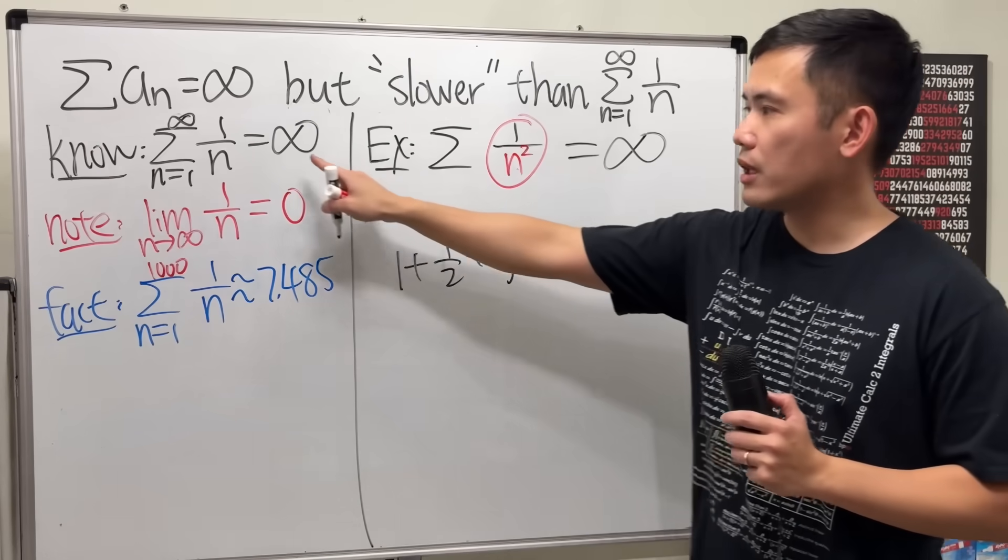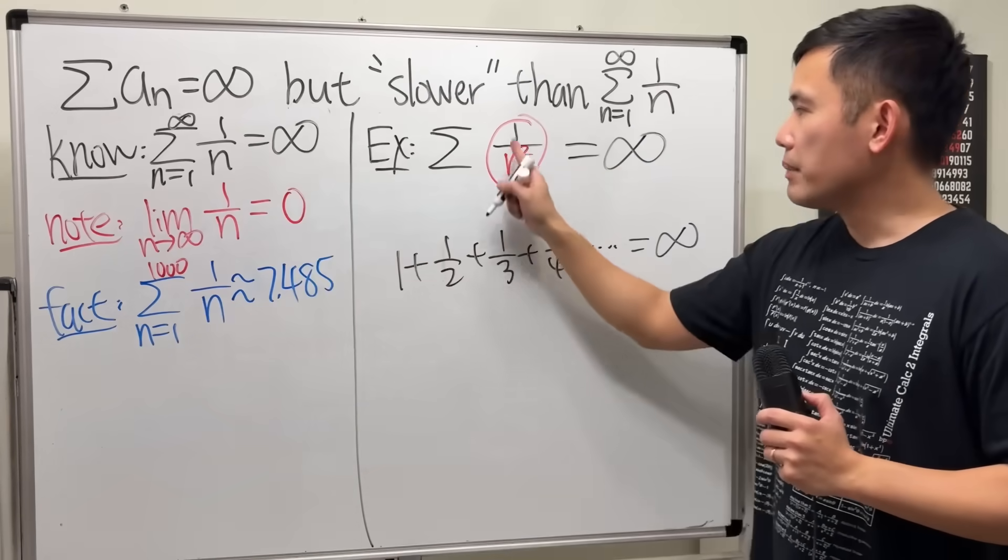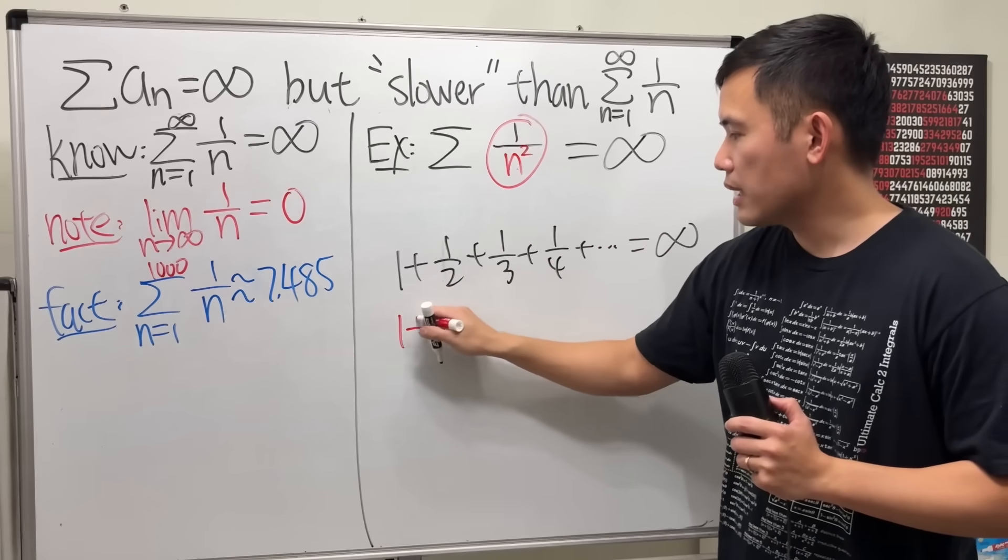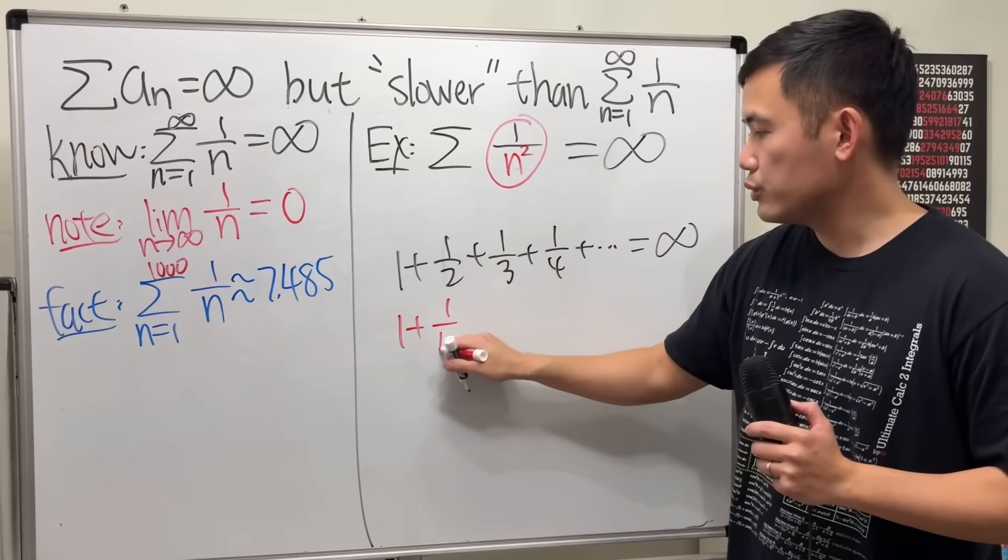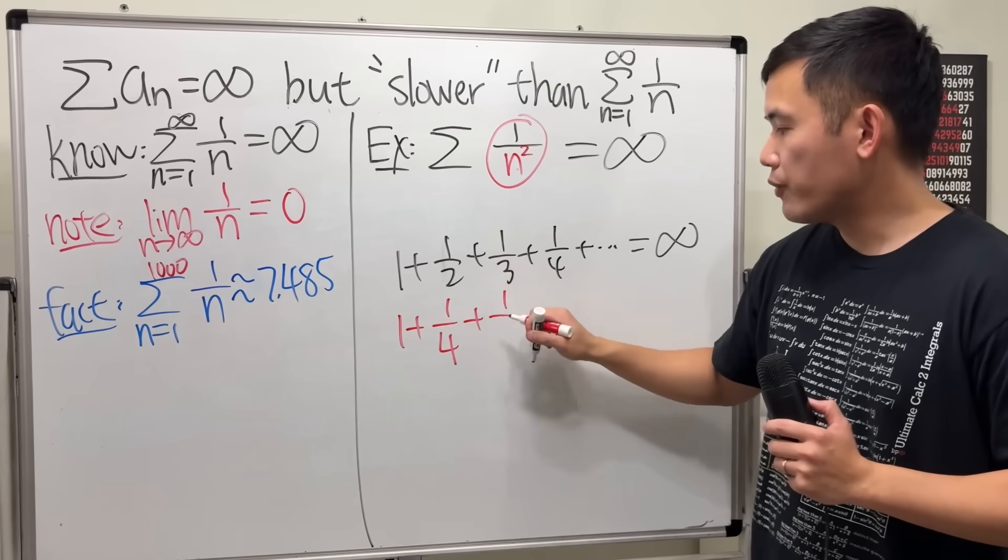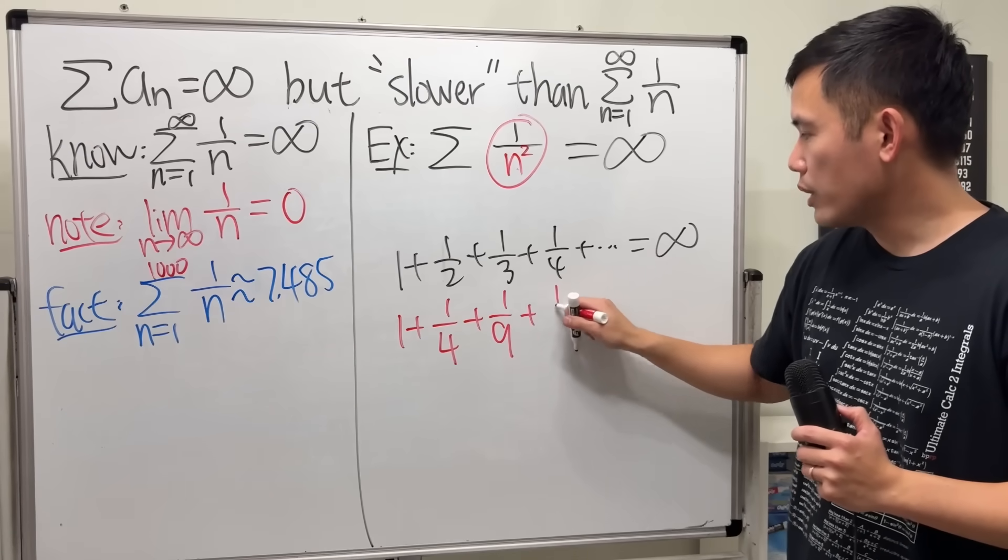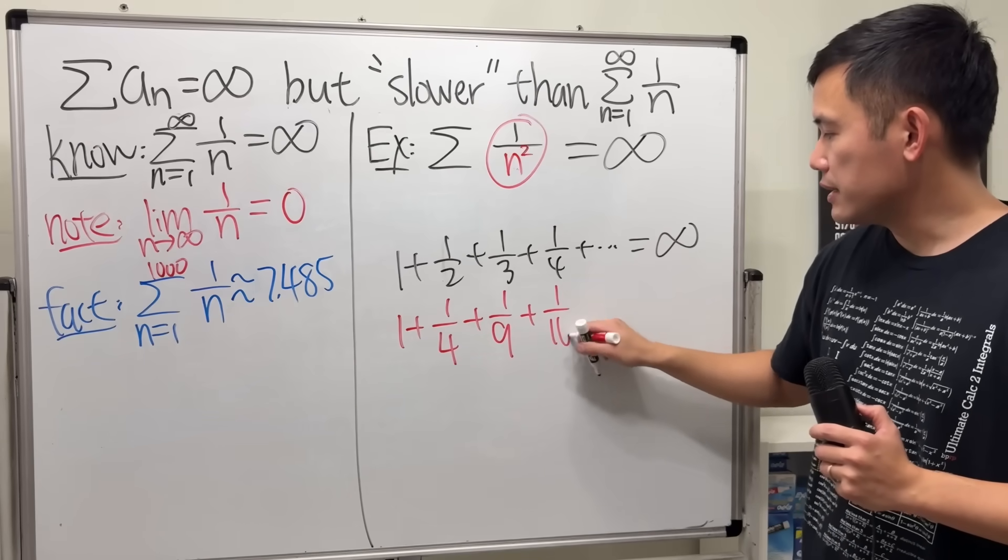1 plus 1/2 plus 1/3 plus 1 over 4 plus dot dot dot goes to infinity from the harmonic series. But this right here is 1 plus 1 over 2 squared, which is 4, plus 1 over 3 squared, which is 9, plus 1 over 4 squared, which is 16.